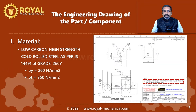I suggest you check on Google for Indian Standard document number 14491. You can find the mechanical properties of low carbon, high strength cold rolled steel of grade 260Y in this document. The yield strength is 260 Newton per millimetre square and the tensile strength is 350 Newton per millimetre square.